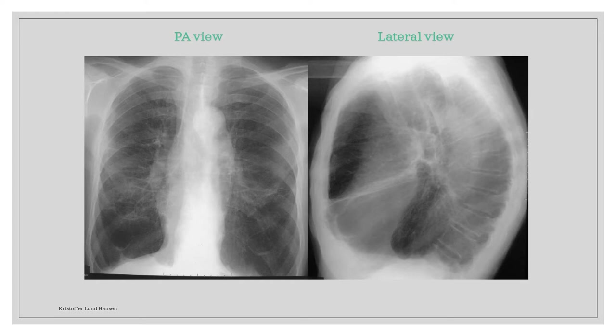The first thing I see is that the PA view x-ray is not a very good one. We can't see the bottom part of the lungs, and therefore we can't evaluate the sinuses properly. But what we can evaluate is the posterior-anterior diameter, which is abnormally large. We can also see that the diaphragm is quite straight. Both of these changes tell us that we have lung hyperinflation.